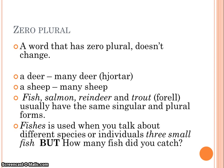We also have a few nouns that have zero plural, meaning they don't change in the plural. Deer, sheep, fish, salmon, reindeer, and trout usually have the same singular and plural form. However, fishes is used when you talk about different species or individuals. For example, three small fish, but how many fish did you catch?